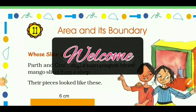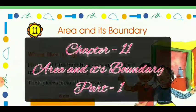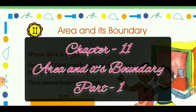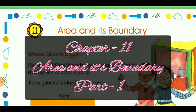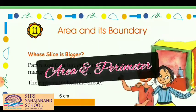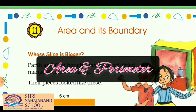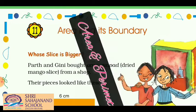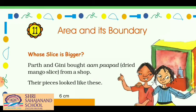Hello dear students and welcome back to this online class video. This is the first part of chapter 11, 'Area and its Boundary', for Class 5 Mathematics. Today's topic is area and perimeter. I have already made a video to understand area and perimeter — it is completely based on the concept and it's Part 1 of Chapter 3, 'How Many Squares'. You can watch it; the link will be provided in the description box.